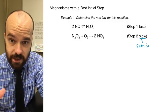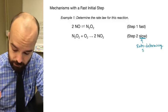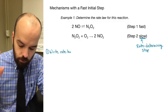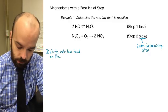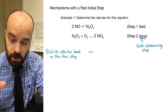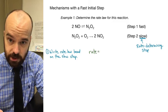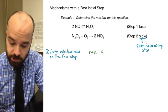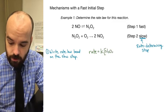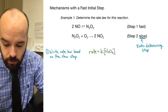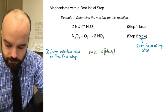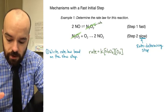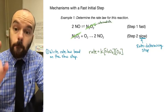We'll start the process the same way — we look at the second step, the rate determining step, and from that we write the rate law based on that slow step. In this case, rate equals k times [InO₂] times [O₂].